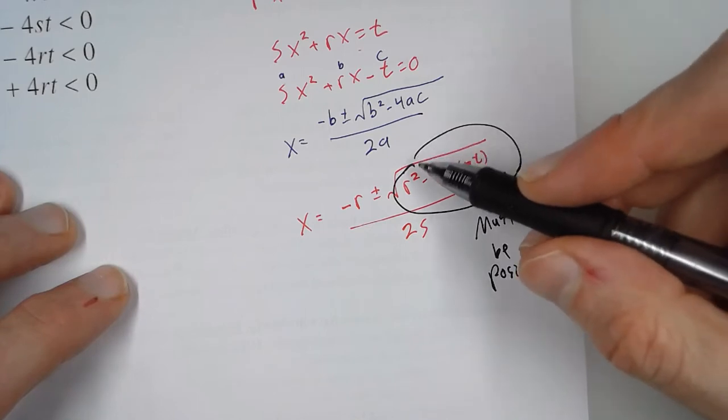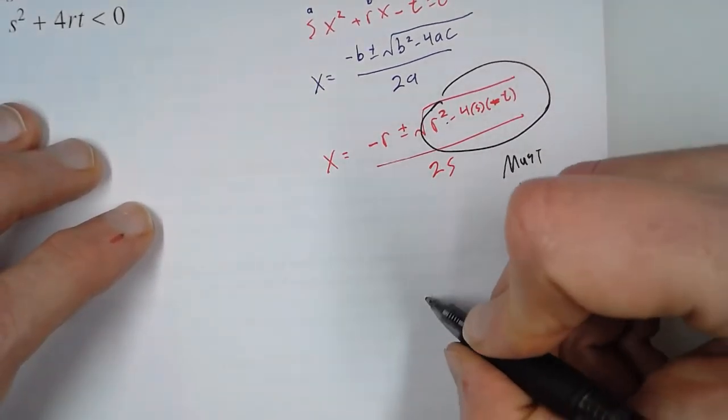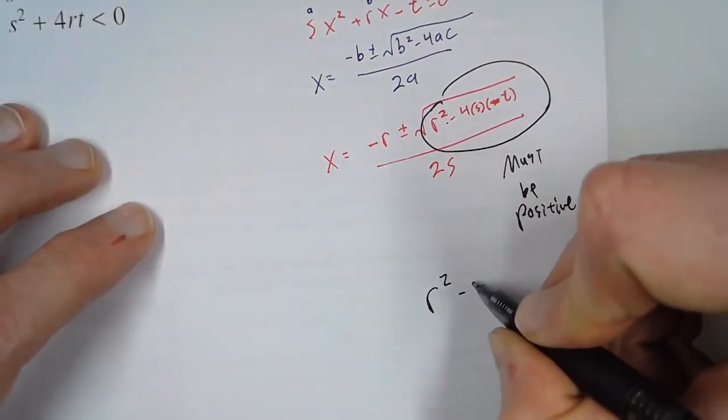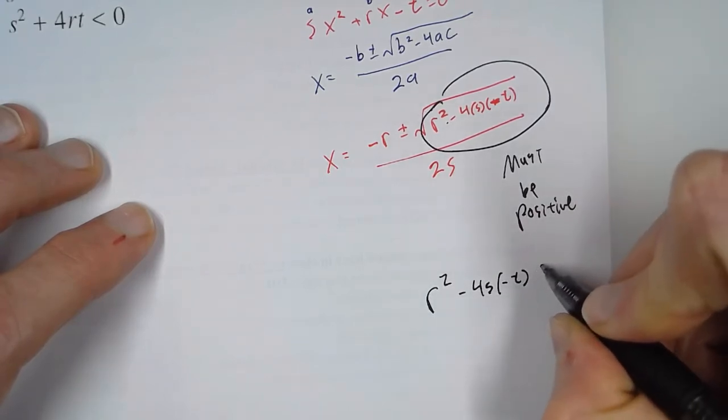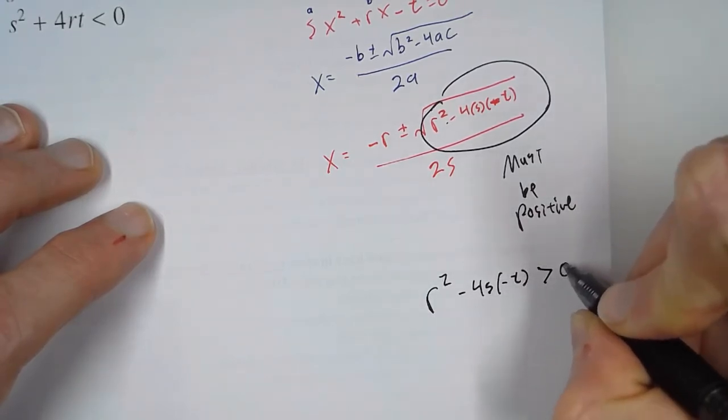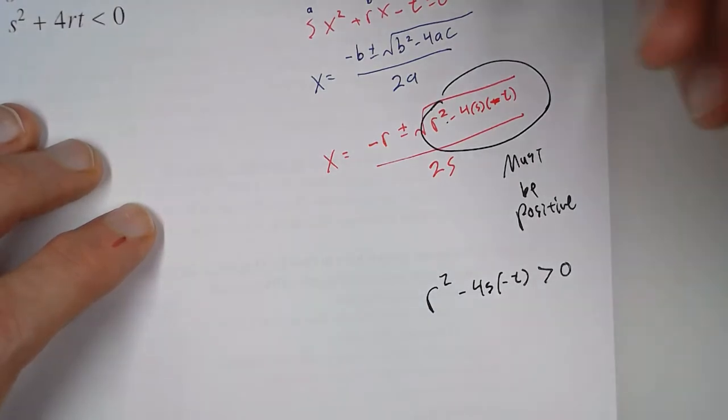So because this must be positive, we can say r squared minus 4s times negative t must be greater than zero. So this is starting to look like one of our answers.